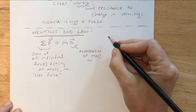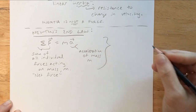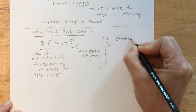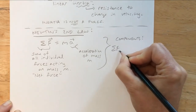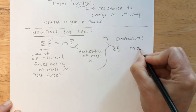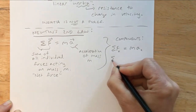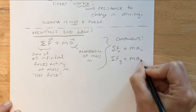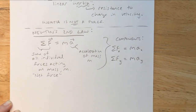In problem solving, sometimes we have multiple dimensions, so we write this in component form. The net force — the sum of forces in the x-direction — is equal to mass times acceleration in the x-direction. And the sum of forces in the y-direction is equal to mass times acceleration in the y-direction. This is how it shows up in problem solving.